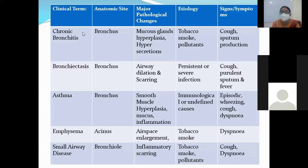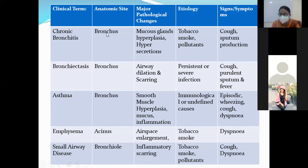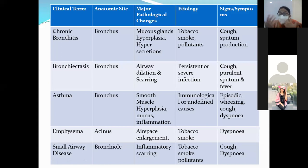In chronic bronchitis, the disease anatomically involves the bronchus, and the pathological changes are associated with the mucus gland. In chronic bronchitis, there is an abnormality in the mucus gland — hyperplasia, hypertrophy, and hypersecretion of the mucus gland. Chronic bronchitis is mostly seen in tobacco smokers. The main symptoms are cough and mucus production.